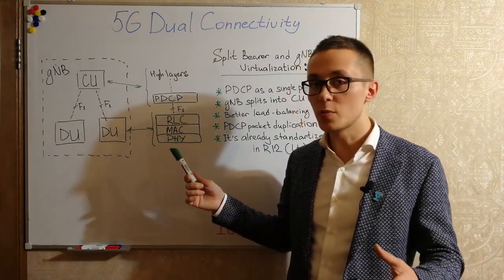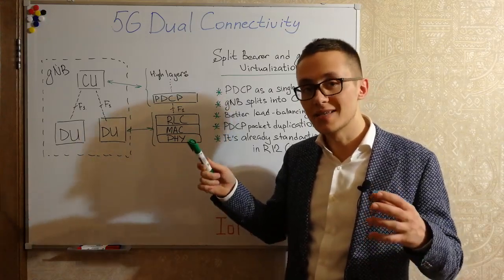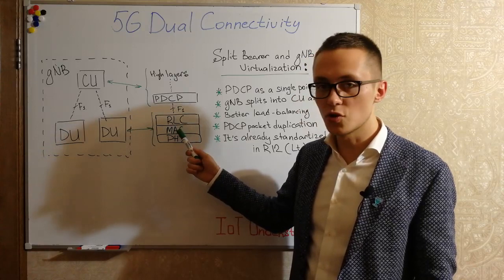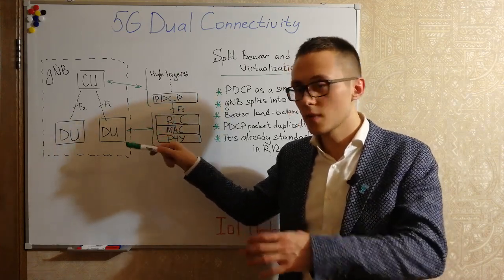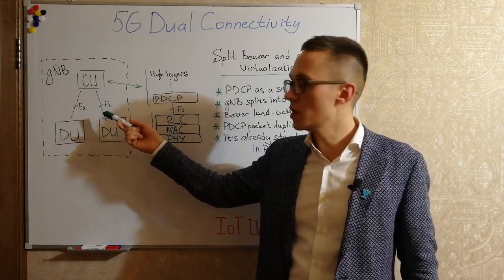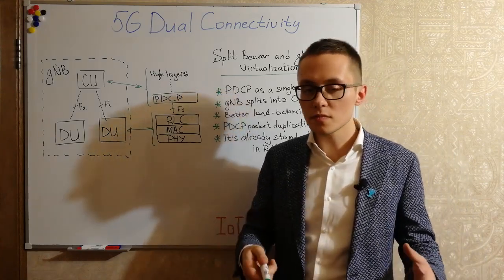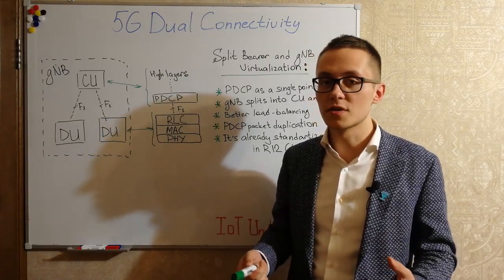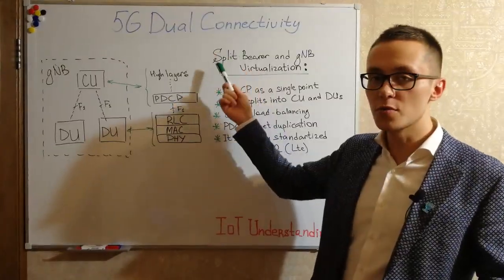We can have even such an option where the physical layer is implemented into an integrated active antenna system with massive MIMO. The medium access control layer and radio link control layer can be implemented into radio units, and all other layers are inside the central unit, which may be located not only inside a baseband processing unit but also on a unified hardware platform as a kind of server.